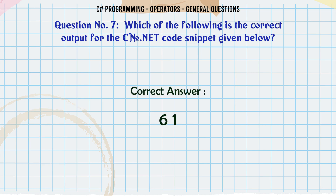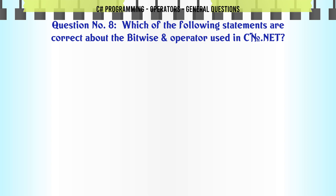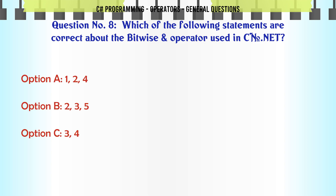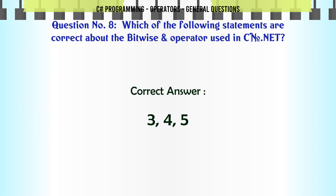Which of the following statements are correct about the bitwise operator used in C.NET? A: 1, 2, 4. B: 2, 3, 5. C: 3, 4. D: 3, 4, 5. The correct answer is 3, 4, 5.